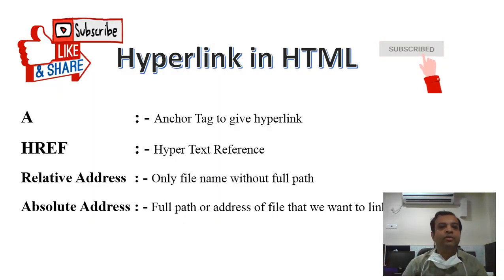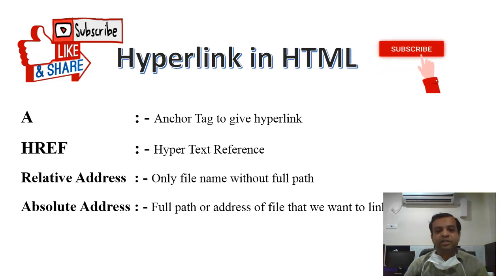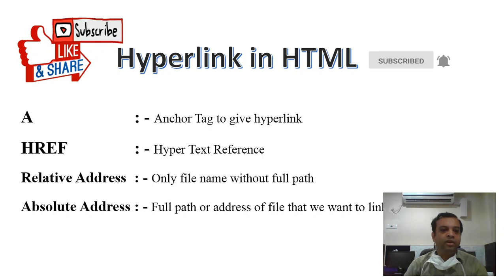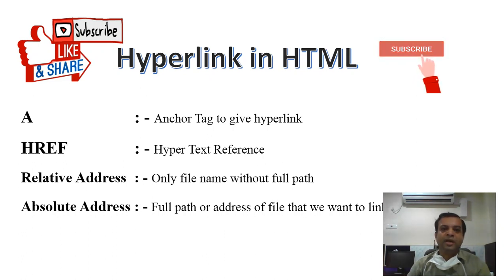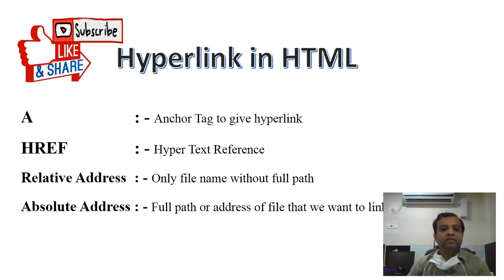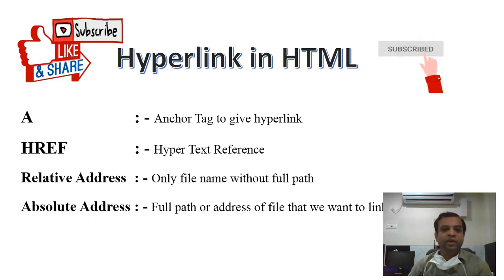So now I think you all understand properly what is hyperlink in HTML, how to give a hyperlink, that the anchor tag is used, and for that we use one property of the a tag which is href — whose full form is Hypertext Reference. Relative address means you just give a file name, but the rule is your HTML file and your linked file both must be in the same folder. If you want to link a file in another location, you have to give the absolute address — use Internet Explorer, press Ctrl+O, click Browse, select your file, copy the address, and paste it in Notepad. All the best — complete your self-test, post a comment, thank you.